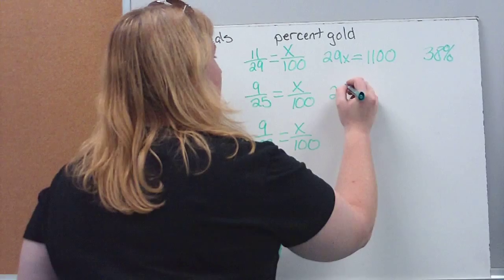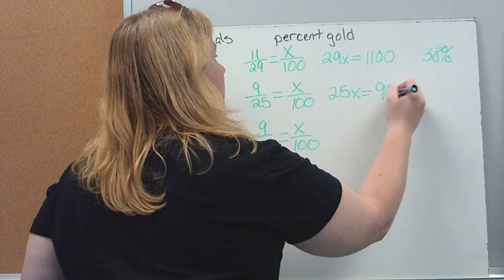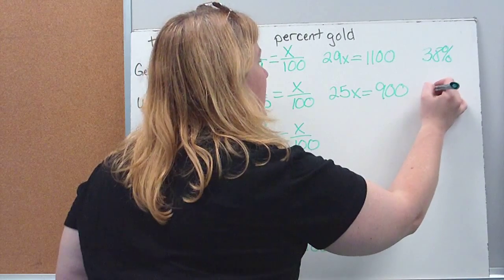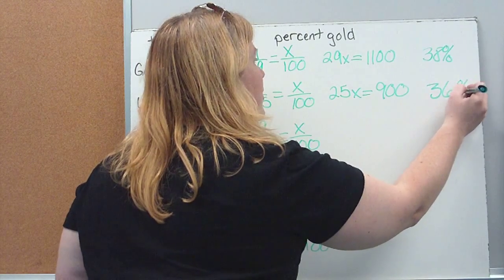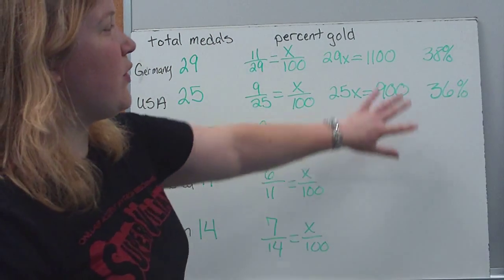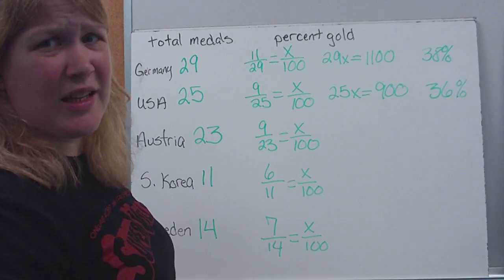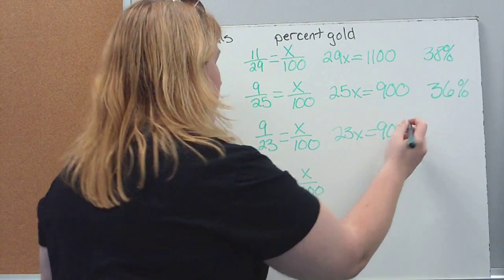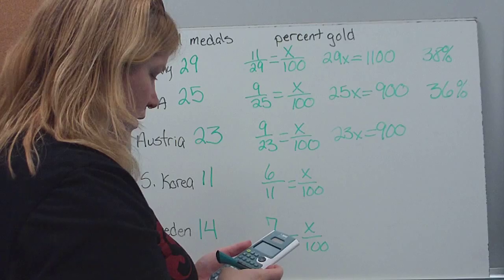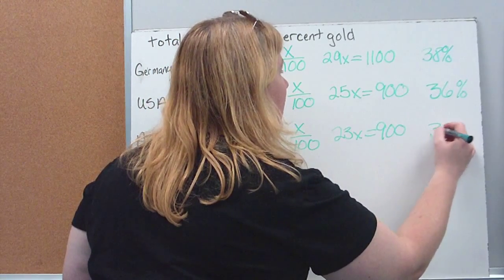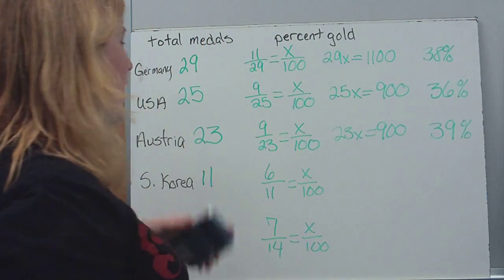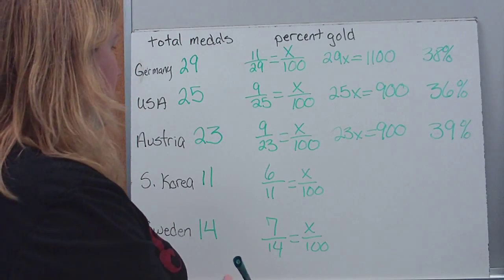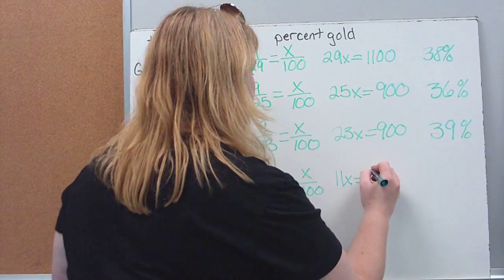For USA: 9 gold out of 25 total equals X over 100. Cross-multiply: 25X equals 900. Divide: we get 36%. So 36% of the US's medals were gold — pretty close percentage-wise to Germany. For Austria: 23X equals 900, which gives 39%. Austria didn't get as many medals overall, but had a greater percentage of their medals as gold.